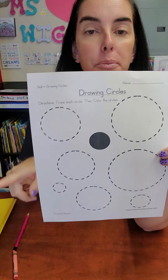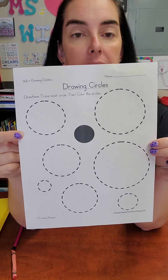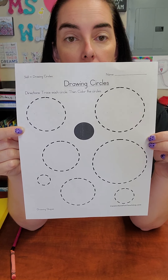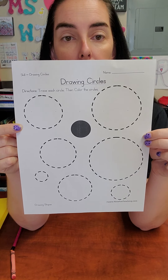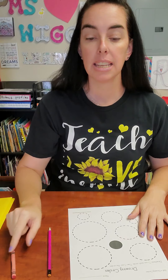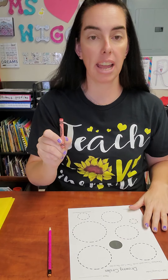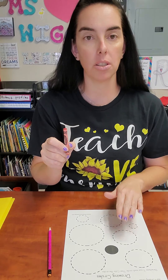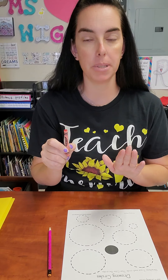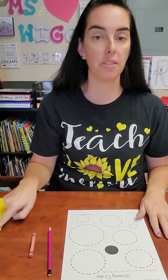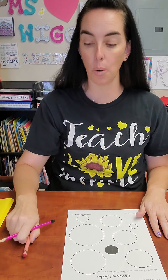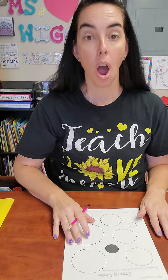Go ahead and go into your communication folder and pull out this paper — it's our circle drawing paper. Then go ahead and get your pencil and your crayon. If you want to color the circles, that will be up to you. Make sure you have your communication folder because we have to know how to spell our name.